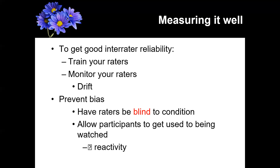It's best if we can keep the researcher in the dark too. For example, in an experiment on a facial cream — whether it removes scars — if your researcher knows which cream is real and which is placebo, that could influence them. Just the expectation and confirmation bias might lead them to say 'yes, the scars faded more' just because of what they expect. So keep your raters in the dark whenever possible. Also, allow participants to get used to being watched to avoid reactivity — we want to make sure participants aren't behaving differently just because they know they're being observed.